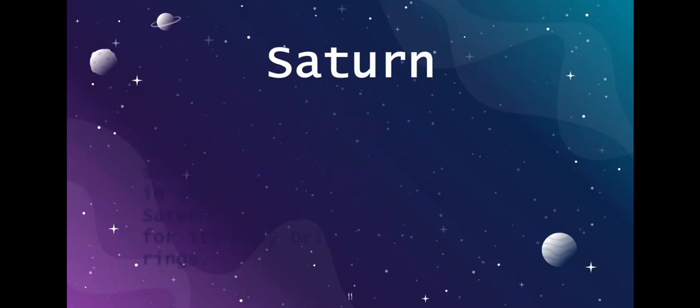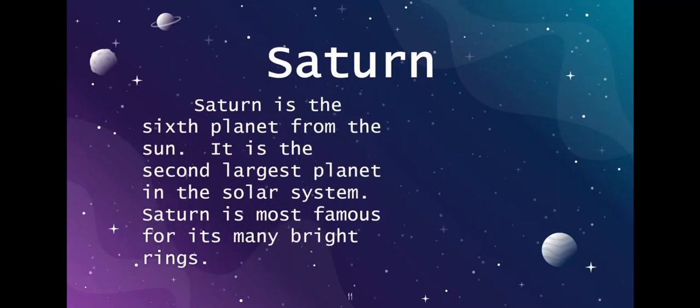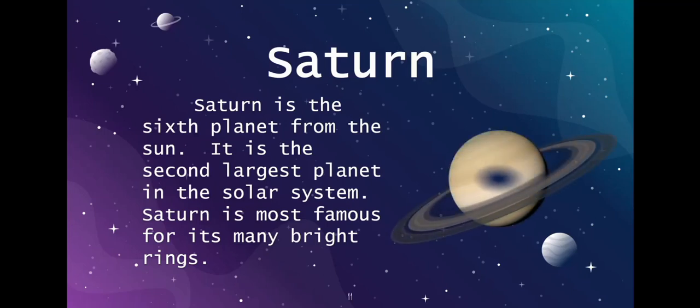Next up is Saturn. Saturn is the sixth planet from the sun and the second largest planet in the solar system. Saturn is most famous for its many bright rings. Although all of the outer planets have rings, Saturn is the only planet whose rings can be seen from Earth.